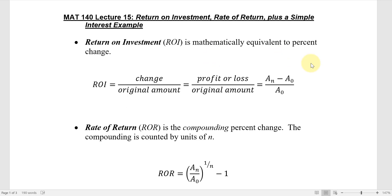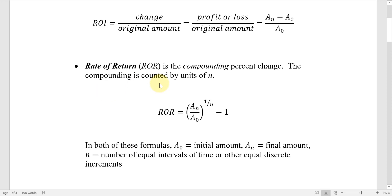There are two formulas we'll be using in these examples. The first is for the calculation of return on investment, ROI. This is mathematically equivalent to percent change. Return on investment is simply the change in some quantity divided by that original quantity — in finance, the profit or loss amount divided by some original amount. We use a_n to represent a future amount and a_0 as the initial amount.